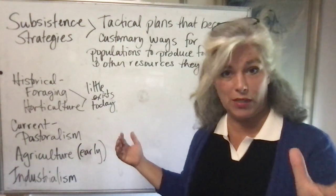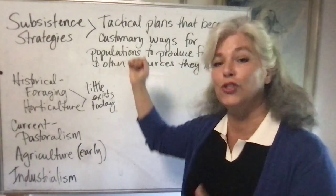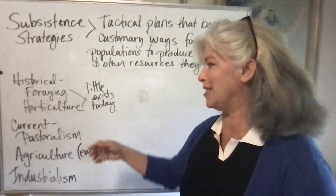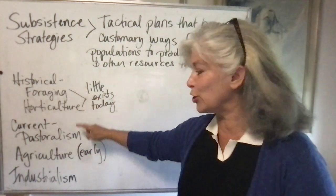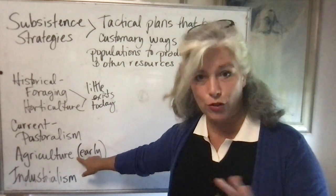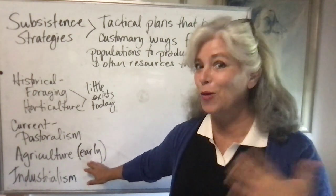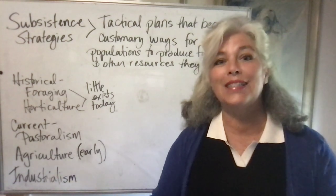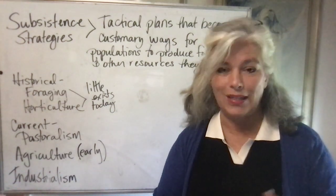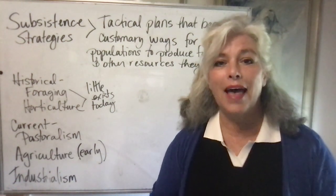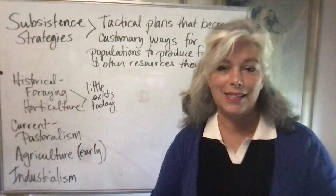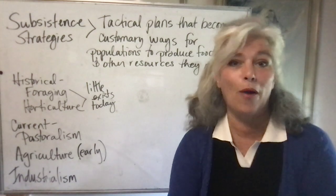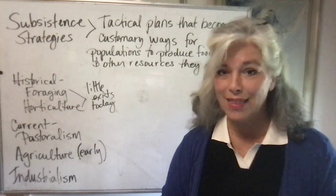The five things I'm going to talk about specifically in this subsistence strategy video are the five subsistence strategies: foraging, horticulture, pastoralism, agriculture in the early days before we had machines, and then also industrialism — which is industrialized agriculture or intensive agriculture — the phrase you will see in chapters 10 and 11 that we're focusing on this week.